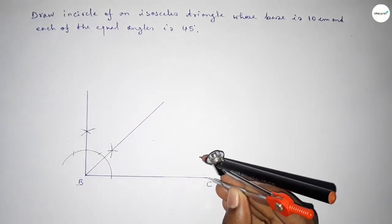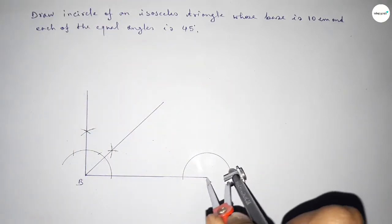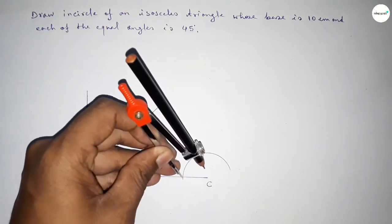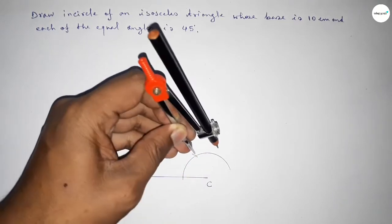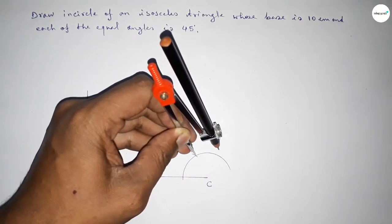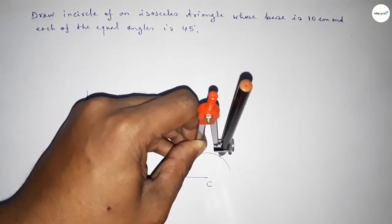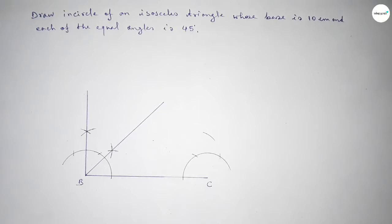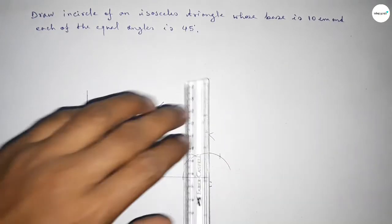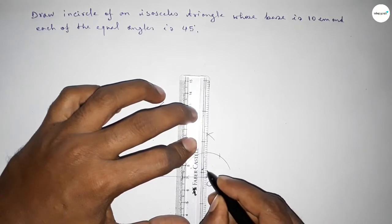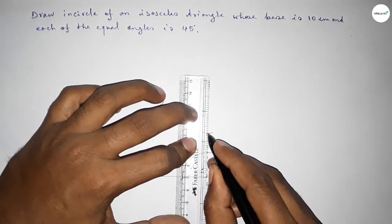Again we have to draw a 90 degree angle at point C using the same process. With the same length putting the compass here and cutting here, again with the same length putting the compass here and cutting here. First drawing another 90 degree angle, then bisecting this angle to get 45 degrees.